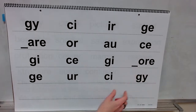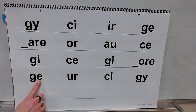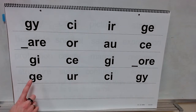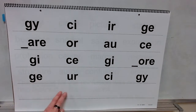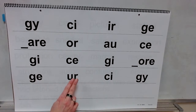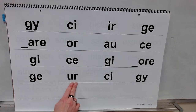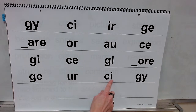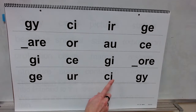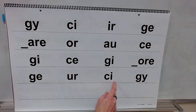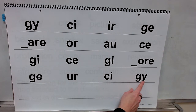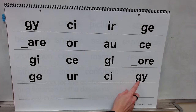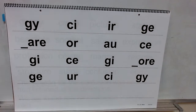Sounds: or. With this E. Sound: J. Sound: er. With the I. Sound: S. And followed by a Y. Sound: J.